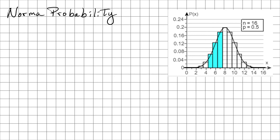So now what we want to do is go ahead and calculate the normal probability — or using the normal distribution. So let's start this over. To start with the normal probability, we know that Q is going to be equal to 1 minus P, which is going to be 1 minus 0.5, which is 0.5.